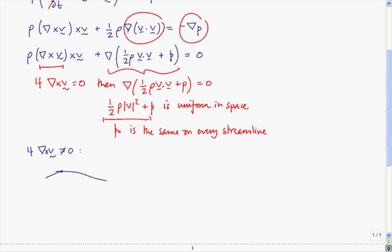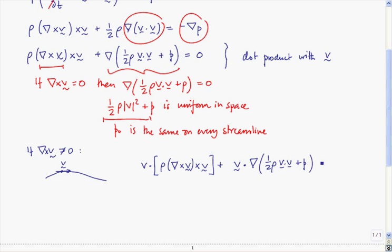So what I'm going to do now is take the dot product of this equation with the velocity along a streamline. I could do it with a unit vector along the streamline too, but it's just as easy to do it with the velocity, because that is always pointing in the streamline direction. So I'm going to get v dotted with rho curl of v crossed with v plus v dotted with the gradient of a half rho v dot v plus p, and that equals zero.